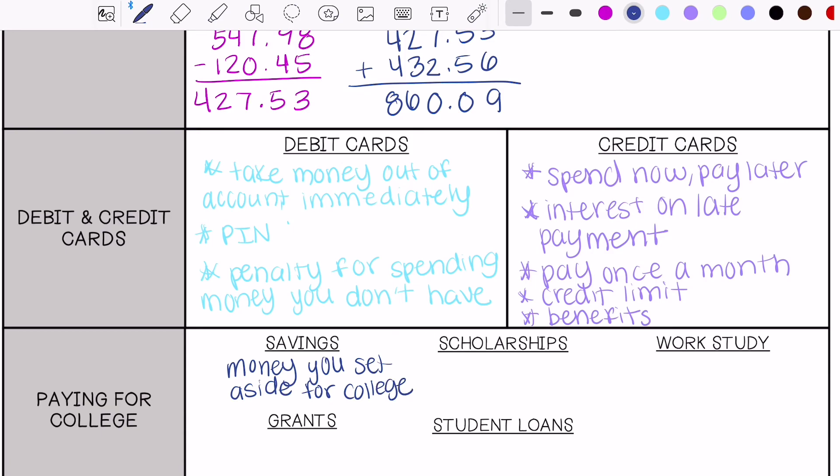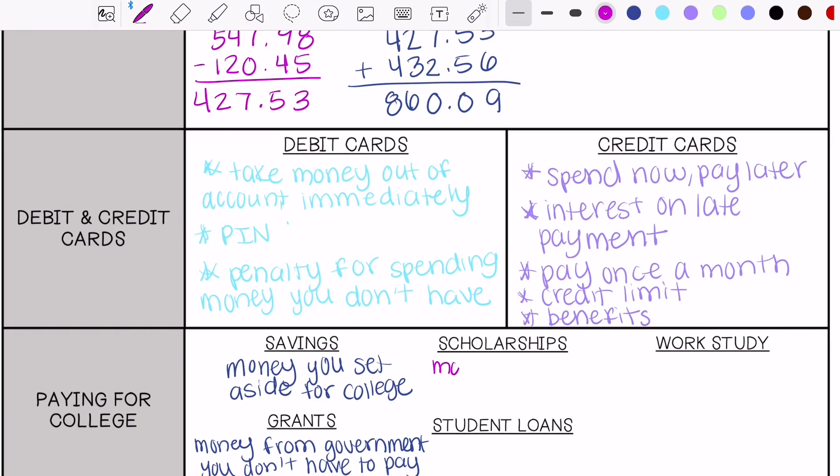Grants are money from the government you don't have to pay back. Scholarships are money awarded to you for some type of reason, it may be grades, sports.